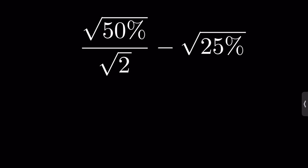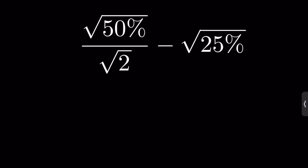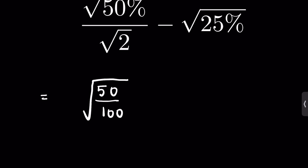Let's solve: √(50%) / √2 − √(25%). 50% means 50 upon 100 under square root, then upon square root of 2, minus 25% which means 25 upon 100 under square root.